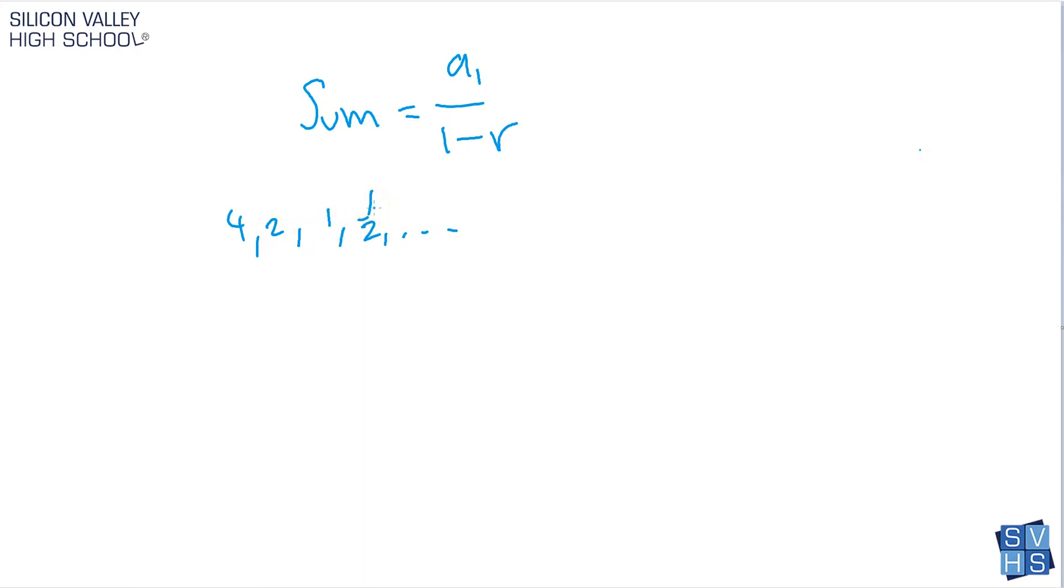So a to the 1 and r, what are those? A to the 1 is the easiest guy because that's just the first term. So in this case, a to the 1 is 4. And r, it's a little bit weirder. It's what you're multiplying by every time. So again, in this case, I'll show you problems where this is not this easy, but in this case, r is definitely a half.